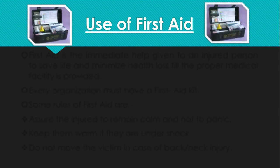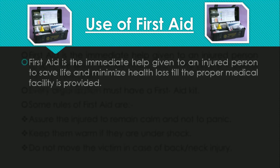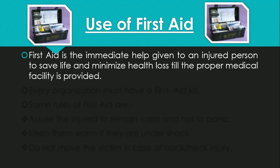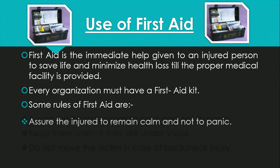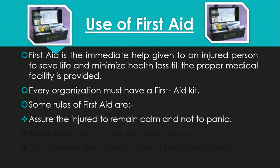Next we have the use of first aid. In case any such thing happens, we should know how to tackle it. First aid is the immediate help given to an injured person to save life and minimize health deterioration until proper medical treatment or facility is provided to that person. Every organization must have a first aid kit as the foremost requirement. One of the rules of first aid is to assure the injured person to remain calm and not to panic if any person has fallen, slipped, or been injured.